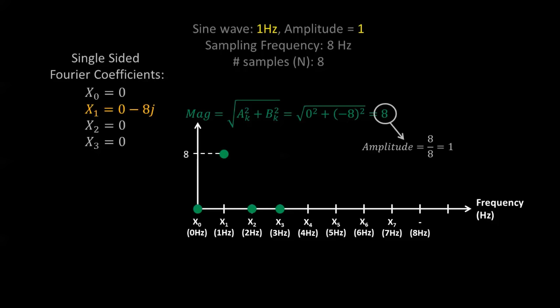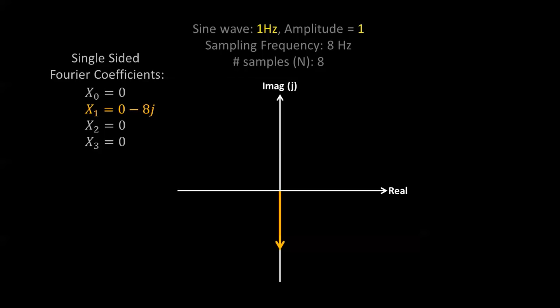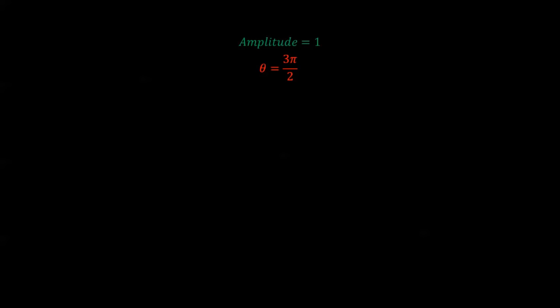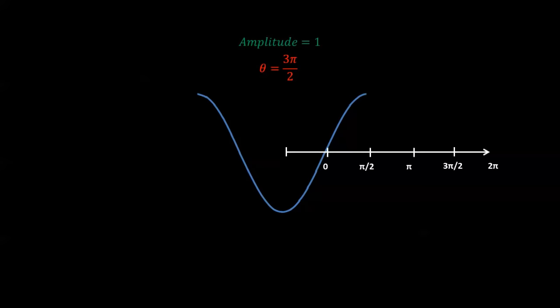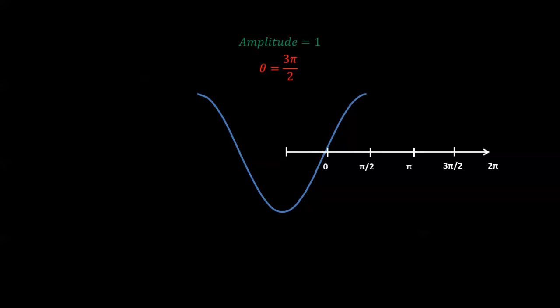So we have a single-sided Fourier coefficient of 0 - 8j. Plotting that on a complex plane, measuring the angle off the positive real axis, we get a phase angle of 3π/2. This gives us amplitude equal to 1 and a phase angle of 3π/2. The phase is referenced to a cosine wave, and shifting a cosine by 3π/2 yields exactly a sine wave — confirming our result of a sine wave with amplitude equals 1.